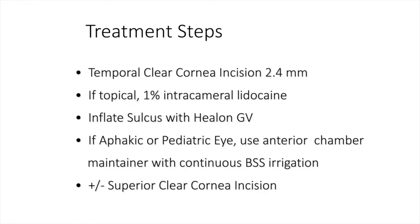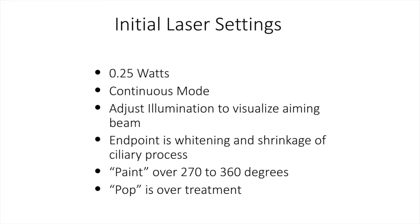From a treatment standpoint, I use a temporal clear corneal incision of around 2.4 millimeters. With a 2.2 millimeter incision, you might have a greater tendency for oar-locking, where the probe moves the globe from side to side as you try to reach a wider degree of ciliary processes. Inflate the sulcus with a cohesive viscoelastic — I tend to use Healon GV, which does a good job of elevating the iris off the ciliary processes. Initial laser settings: 0.25 watts on continuous mode. I adjust illumination to visualize the aiming beam. The endpoint is whitening and shrinkage of the ciliary processes, and I advocate for a painting motion over 270 to 360 degrees rather than treating one process at a time.